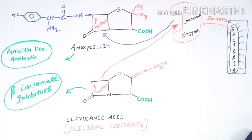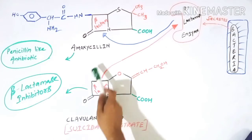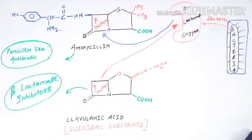Hello dear viewers, welcome back to MedCam Companion channel. Today in this session we will discuss why clavulanic acid is added to the amoxicillin antibiotic while making a suitable dosage form. You have seen several dosage forms available in the market in which amoxicillin is usually present with clavulanic acid.